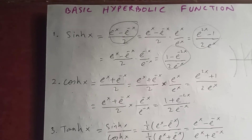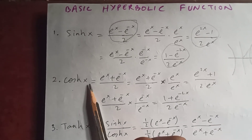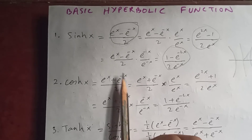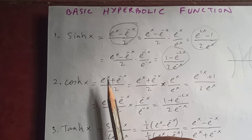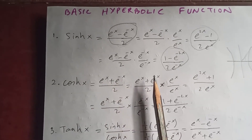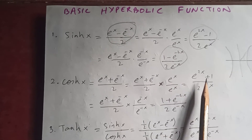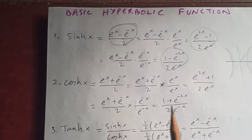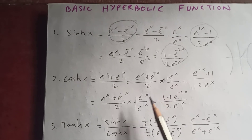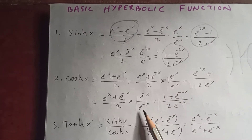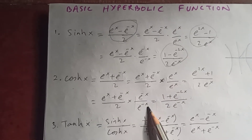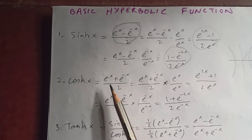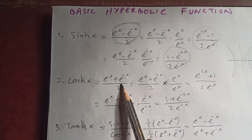Cos hyperbolic of x is e to the x plus e to the negative x, upon 2 — which I have derived previously. Multiplying by e to the x gives one equivalent form, and if you multiply both numerator and denominator by e to the negative x, you get another form. So cosh(x) can similarly be expressed in three equivalent forms.